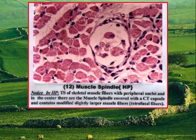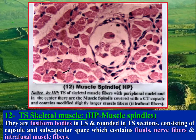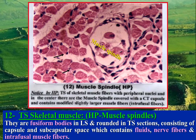TS of skeletal muscle high power: skeletal muscle fibers are seen with peripheral flattened nuclei. Each fiber is surrounded by connective tissue called endomysium. The fibers are grouped in bundles separated by connective tissue called perimysium. Scattered between the fibers are muscle spindles, which are fusiform bodies in longitudinal section and rounded in transverse sections.